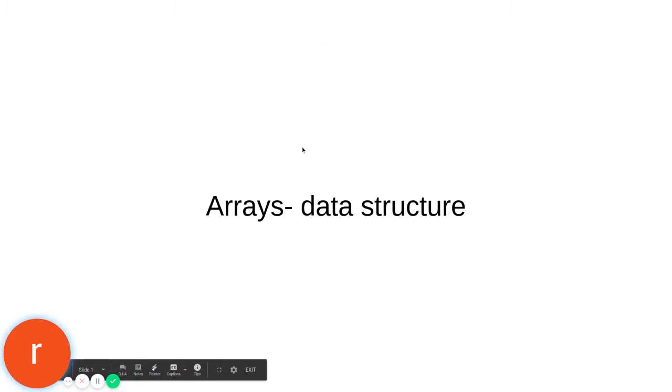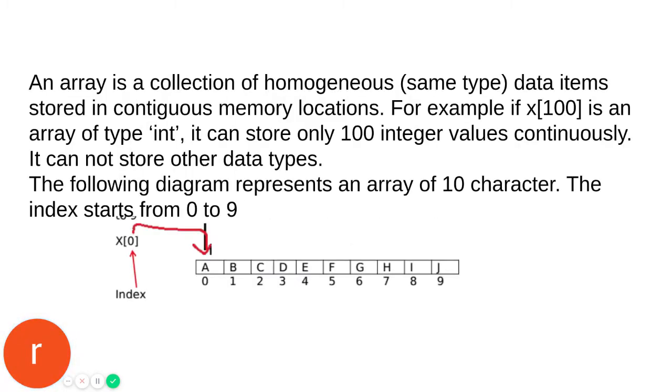In this video, we are going to see array data structures. An array is a collection of homogeneous data items. For example, all elements are of the same type, like characters or integers, and all elements within the array should be of the same type.